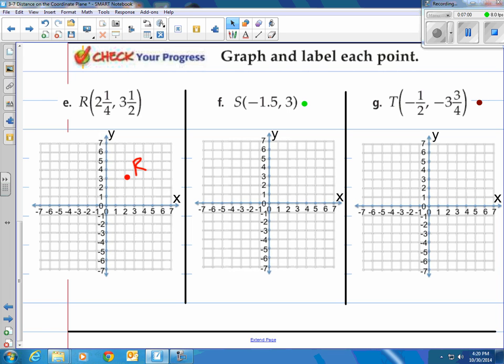How about this one? We've got negative 1.5, 3. So the first one is the x value. So we go to negative 1.5. That's right there. And then we'd go up to three. Located there. Then, of course, we give it a name, S. And our last one. Start at the origin. Go to negative one half, which is right about there. Then find negative three and three fourths on the y axis. That's down here. That's one, two, three, and then three fourths is about there. So there's negative one half, negative three and three fourths. Then, of course, don't forget to label it. And that one's T.